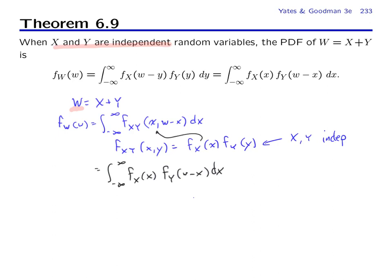Depending on your experience with other courses in the EE curriculum or perhaps with differential equations, this form of integral where we have a factor f_X as a function of x and another function which is a function of something minus x, in this case w minus x, may or may not look familiar. In fact, this is called the convolution of the PDF of x and the PDF of y. And perhaps in a linear systems course, you saw that the output of a linear time invariant filter was the convolution of the input and the filter impulse response.